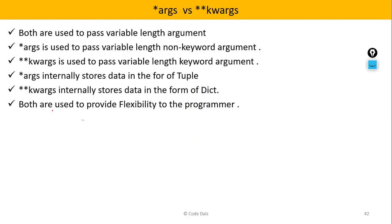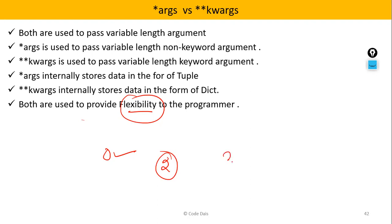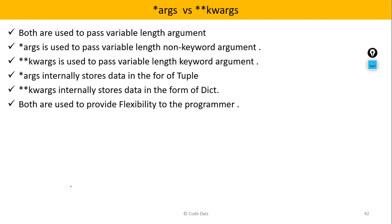Both *args and **kwargs are basically used to provide flexibility to the programmers. That means if the programmer's requirement is to pass zero arguments they can pass zero, if two arguments they pass two, if 35 arguments they can pass 35 arguments. So it gives flexibility to the programmers.